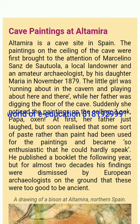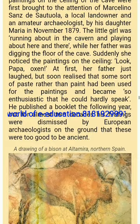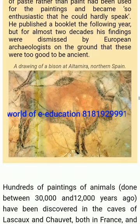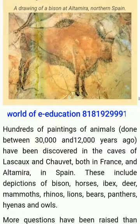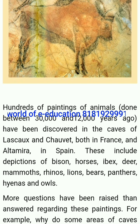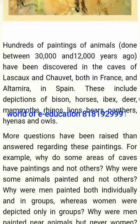Altamira is a cave site in Spain. The paintings on the ceiling of the cave were first brought to the attention of Marcelino Sanz de Sautuola, a local landowner and an amateur archaeologist, by his daughter Maria in November 1879. The little girl was running about in the cavern while her father was digging the floor of the cave. Suddenly she noticed the paintings on the ceiling and cried: 'Look, Papa, oxen!' At first her father just laughed, but soon realized that some sort of paste rather than paint had been used, and became so enthusiastic that he could hardly speak. He published a booklet the following year, but for almost two decades his findings were dismissed by European archaeologists on the ground that these were too good to be ancient. Hundreds of paintings of animals, done between 30,000 and 12,000 years ago, have been discovered in the caves of Lascaux and Chauvet in France and Altamira in Spain — including depictions of bison, horses, ibex, deer, mammoths, rhinos, lions, bears, panthers, hyenas and owls.